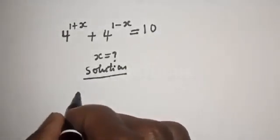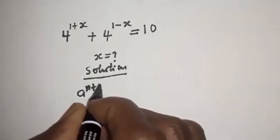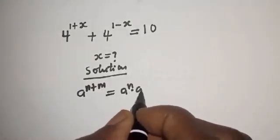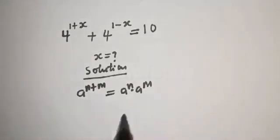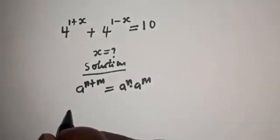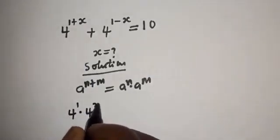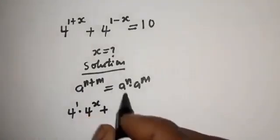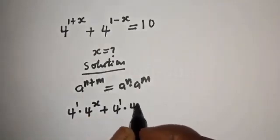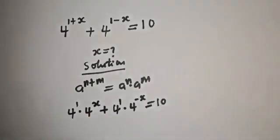Take note of this exponential rule: if you have a raised to power (n plus m), this is equal to a raised to power n multiplied by a raised to power m. Then this can be written as 4 raised to power 1 multiplied by 4 raised to power x, plus 4 raised to power 1 multiplied by 4 raised to power minus x, is equal to 10.